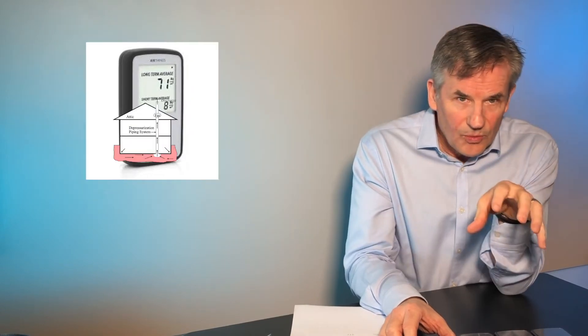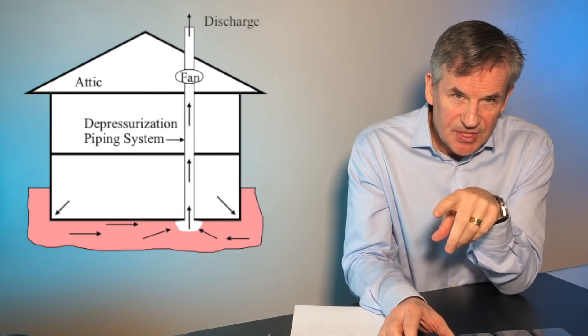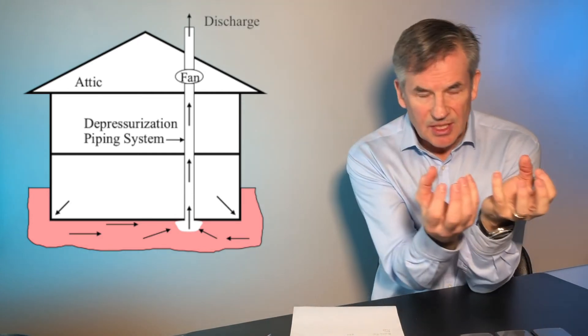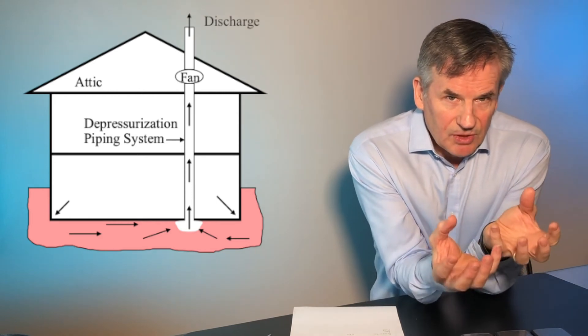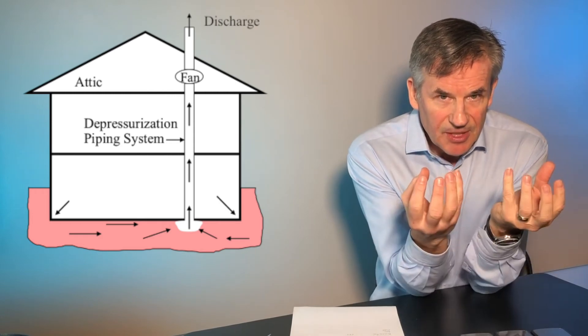If you have a high level of radon, it's not that big of a problem to solve. There are two main ways of solving it. The first is sub-slab depressurization. The radon is in the ground around and below your house, so if you have negative air pressure in your house, the gas will come in.